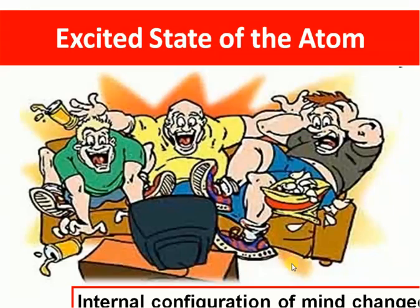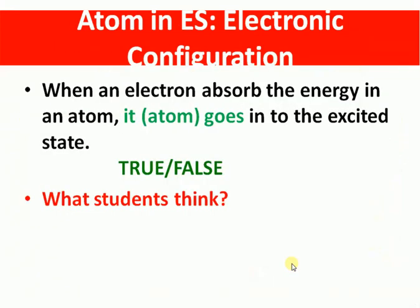When we apply this explanation to the atom, it fits perfectly to explain what happens in the excited state — the internal electronic configuration of the atom changes. This is the approach teachers were using. When an electron absorbs energy in an atom, it goes into the excited state, and a number of students understand this as the atom going from the ground state to the excited state.